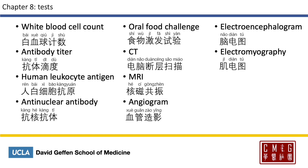For common tests, white blood cell count is 白血球计数, and antibody titer is 抗体滴度. Human leukocyte antigen is 人白细胞抗原. Anti-nuclear antibody is 抗核抗体. A food challenge is 食物激发试验. CT is 电脑断层扫描, and MRI is 核磁共振. Angiogram is 血管造影, 造影 meaning to create a shadow. Electroencephalogram is 脑电图, and electromyogram is 肌电图.